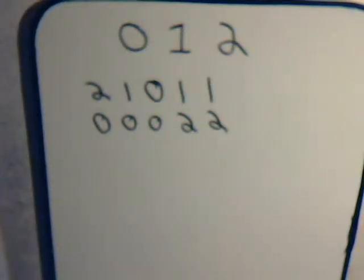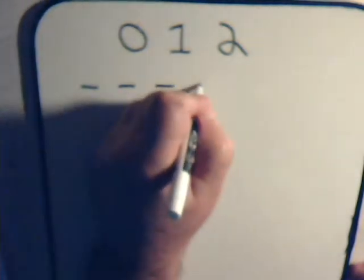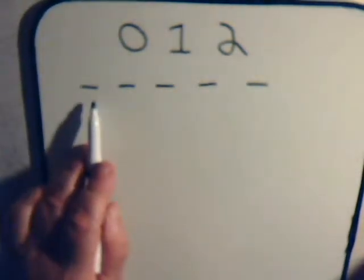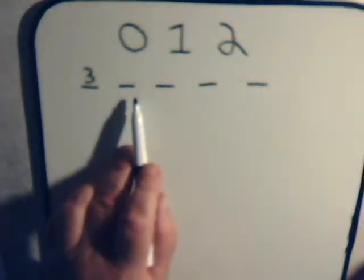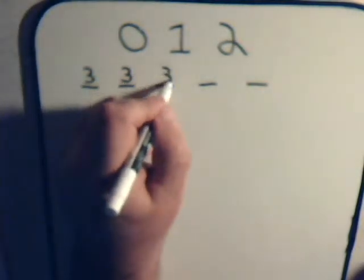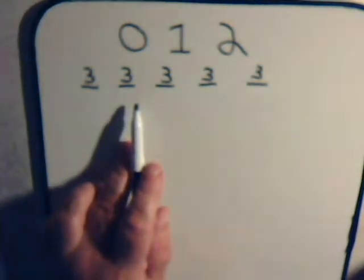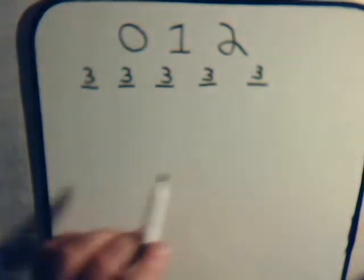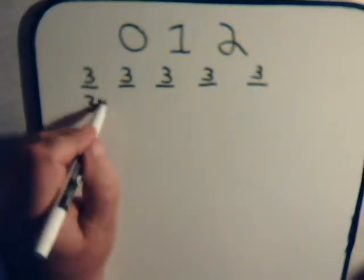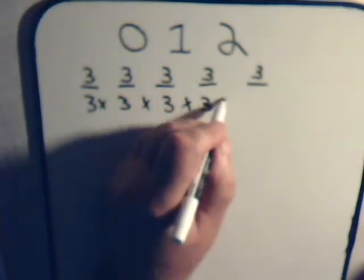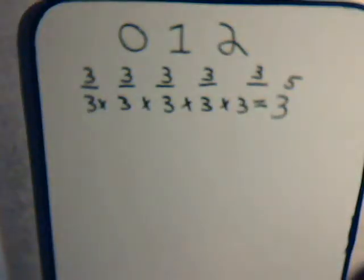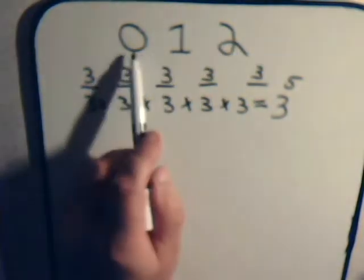We can answer that question right away using the counting principle. For the first digit, we have three numbers to choose from. For the second digit, we also have three numbers to choose from, and likewise for the third, fourth, and fifth digit. For each digit place there are three different numbers to choose from, so for all five digits together the total number of ways is found by multiplying: 3 times 3 times 3 times 3 times 3, which is 3 to the fifth.